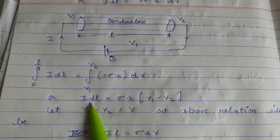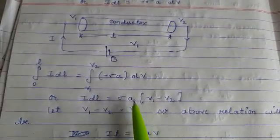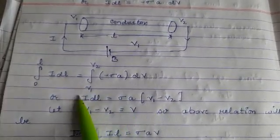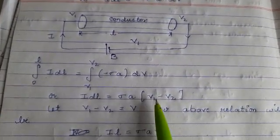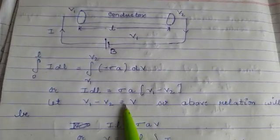...I'm writing this as it is: I·L. For the right side, I'm writing sigma A. Now upper limit minus lower limit, so the negative sign is cancelled out, and we simply write V1 minus V2.